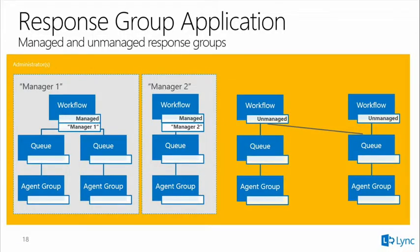Once a response group is managed, you can no longer share groups and queues between managed workflows — this prevents two managers from stepping on each other's configurations. Unmanaged workflows can share queues across multiple workflows. This is a configuration boundary, not a hard technical limitation, but it's enforced to prevent incorrect configuration.